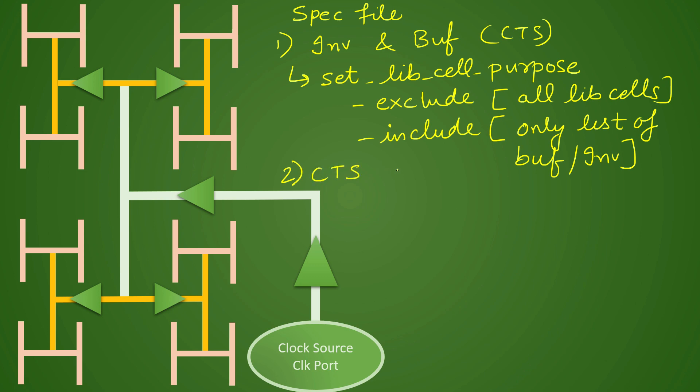Second thing that we specify in this spec file is CTS exceptions. CTS exceptions contains a lot of stuff that we will understand later on in detail. For now you can say that it contains list of endpoints, so wherever the clock should end, that endpoint of the clock will be the flop clock pin. All the clock pins are exceptions to be included in the CTS exception list.